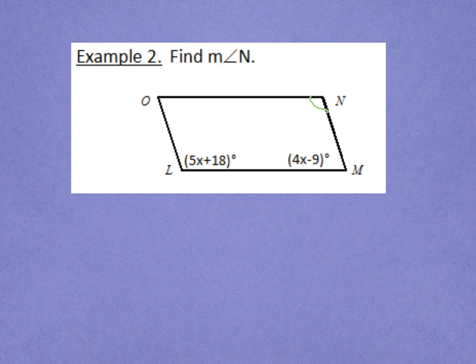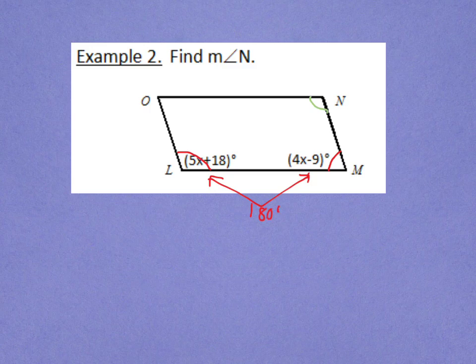What do I know about angles l and m? I know that they are same side interior angles. They're also consecutive angles, which we know to be supplementary. If they're supplementary, we know that they have to add up to 180 degrees. I can use that to write my equation. So, I can say that 5x plus 18 plus 4x minus 9 equals 180 degrees.